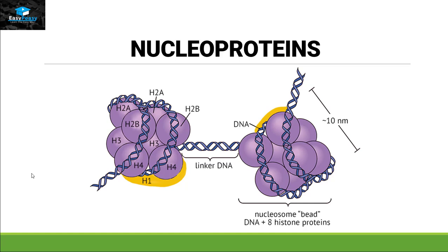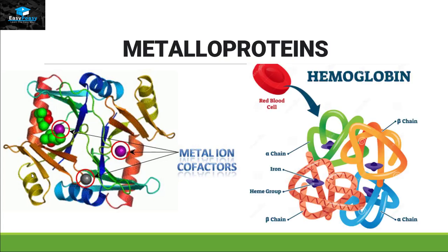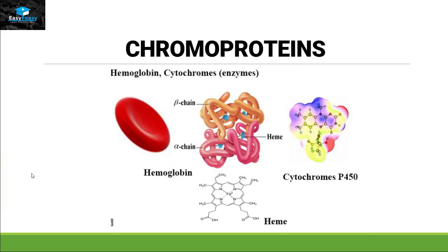Nucleoproteins are proteins attached to a non-protein part that is DNA. Histone is a perfect example, since DNA attaches itself to histone proteins in the nucleosome. Metalloproteins involve the attachment of a metal ion as a cofactor — the perfect example being hemoglobin, which contains the metal ion iron in the form of a heme group. Chromoproteins are proteins with a non-protein prosthetic group attached that changes the color of the protein — again, hemoglobin is an example, since the attachment of iron gives the red color to our blood cells.